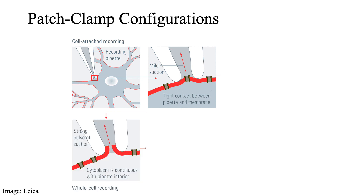The next configuration illustrated on the bottom left is known as whole cell mode, where a second suction is applied to rupture the membrane and gain intracellular access. Whole cell mode is important for achieving the successful voltage clamp of a neuron. This technique allows you to measure the currents generated by ion channels at the soma and at synapses. It can also be used to measure the intrinsic excitability of a cell and much, much more.